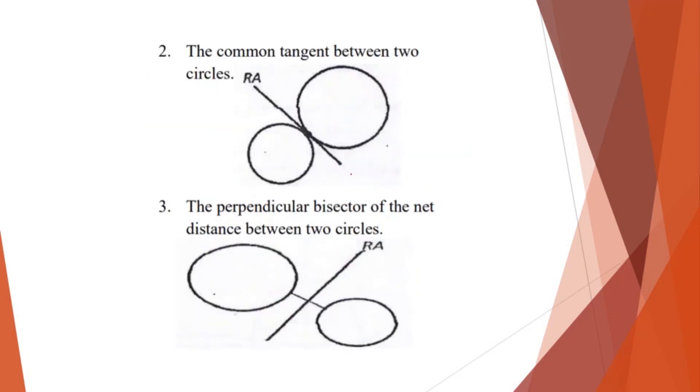Second case is the common tangent between two circles. So this line. So we can denote this as radical axis. And lastly is the perpendicular bisector of the net distance between two circles. So meaning if you have these two circles here. So this is the net distance between the two circles.